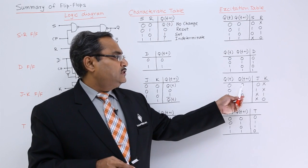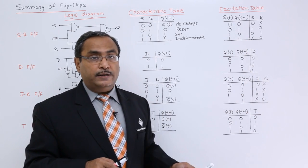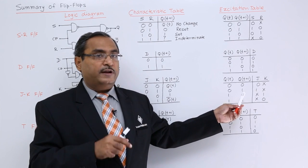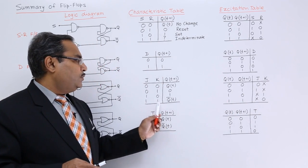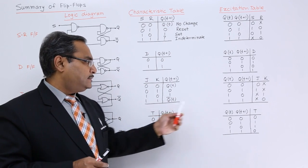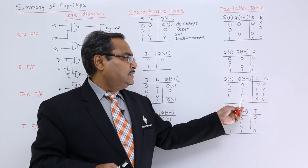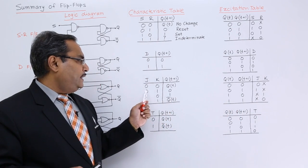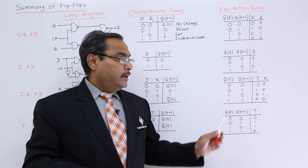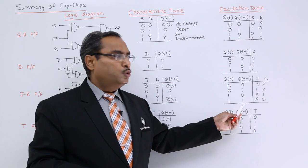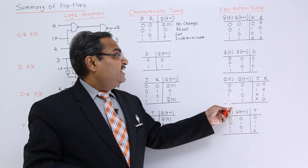For the JK excitation table: 0-to-0 can be no change or reset, so input is 0x. For 0-to-1: either set (1,0) or complement (1,1) — merging gives 1x. For 1-to-0: either reset (0,1) or complement (1,1) — merging gives x1. For 1-to-1: either set (1,0) or no change (0,0) — merging gives x0. So the JK excitation table sequence is: 0x, 1x, x1, x0.